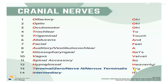Then Trigeminal nerve — from 'Tree' or 'Tri.' And Intermediary nerve. All of these are cranial nerves, and all these cranial nerves are arising from your cranium. These nerves are said to be originated from your cranium.